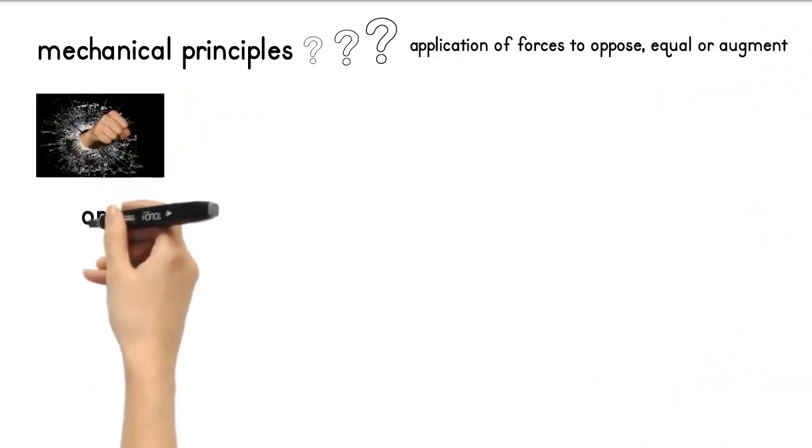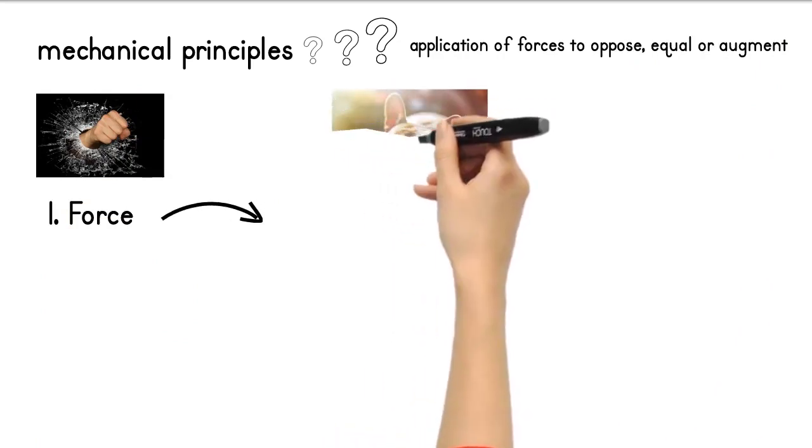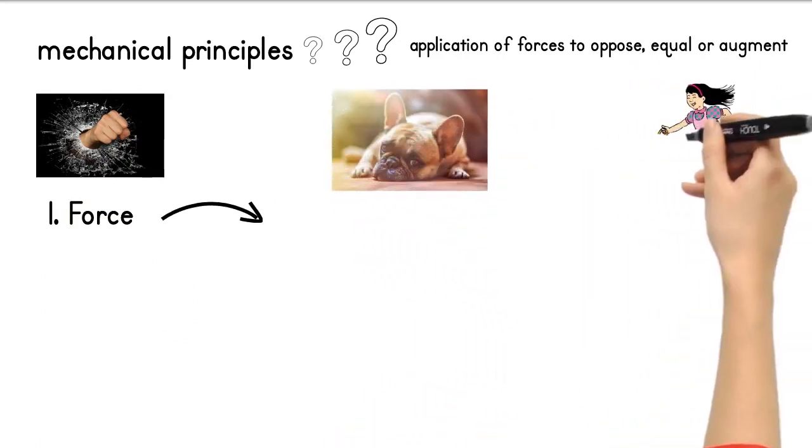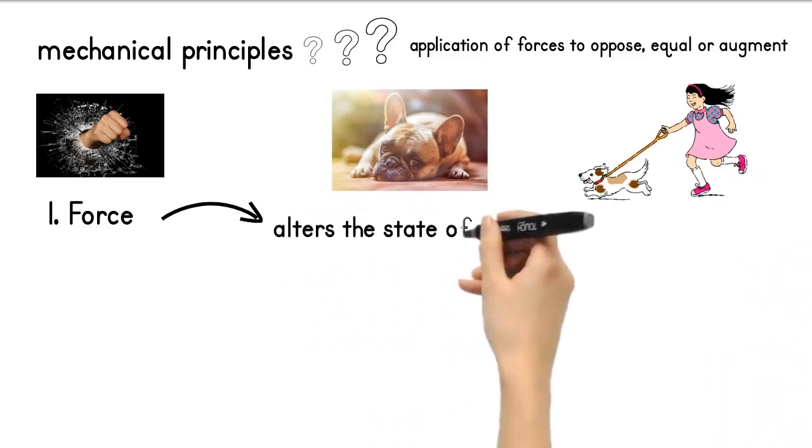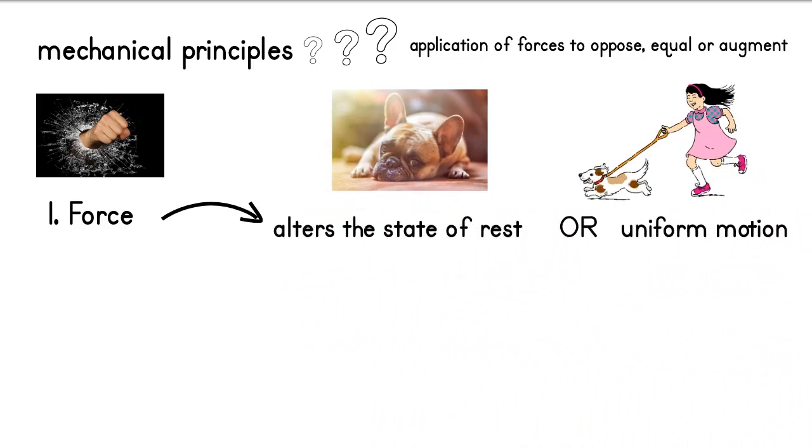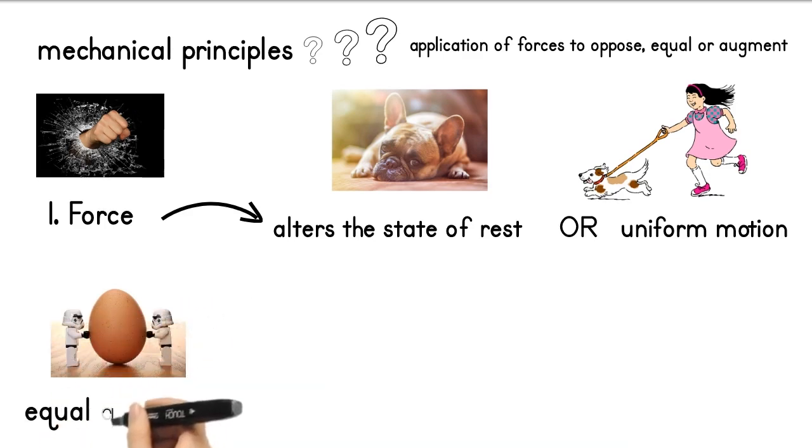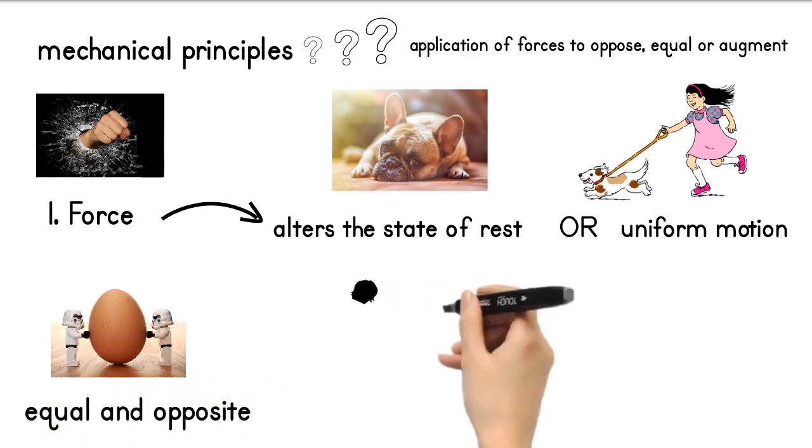These principles are force and tension. Force is the alteration in the state of the body or in the uniform motion. If two forces will act oppositely and with same magnitude, the body will remain at rest. Moreover, the body will move in the direction of force, as in pushing and pulling.